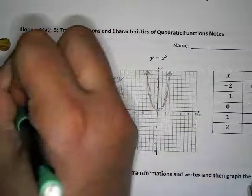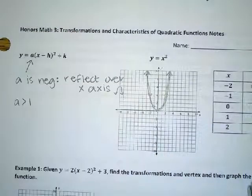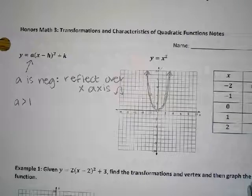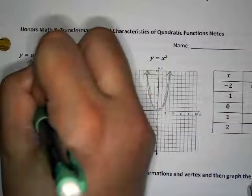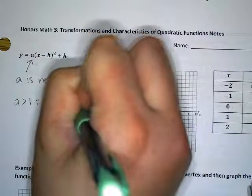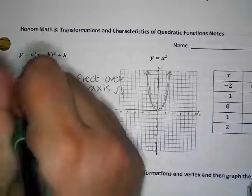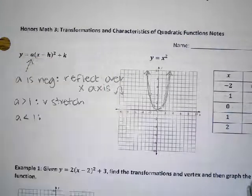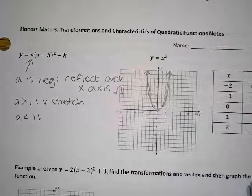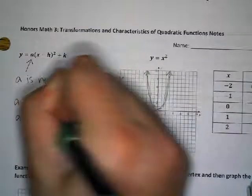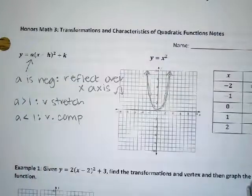If the 'a' value is a number bigger than 1 — whether positive or negative, like -2, 1.5, -3, 2, negative pi, or positive root 7 — it vertically stretches the graph and makes it tall and skinny. If the a value is less than 1 — like two-thirds, negative one-half, 0.7, or negative 0.25 — that makes the graph short and fat. That's a vertical compression, squishing the graph.